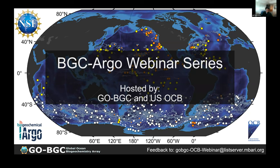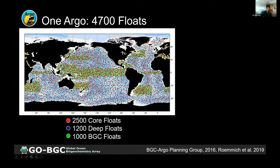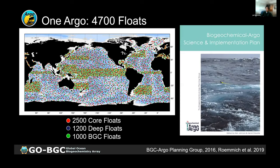We always start this webinar off with a quick summary of BGC Argo and GoBGC. BGC Argo is part of the OneArgo program. The target is 4,700 floats, of which 2,500 will be core floats shown in red, 1,200 deep floats shown in blue, and 1,000 BGC floats shown in green with increased density in key ocean regions.